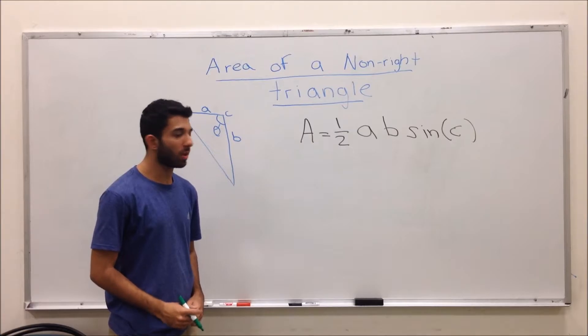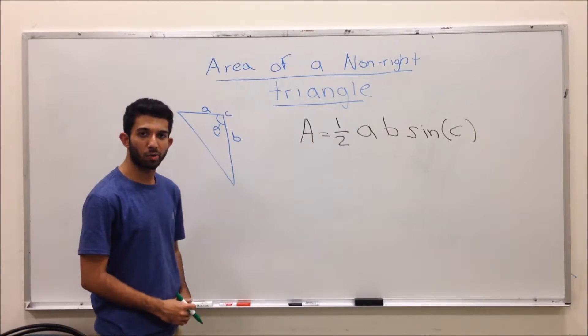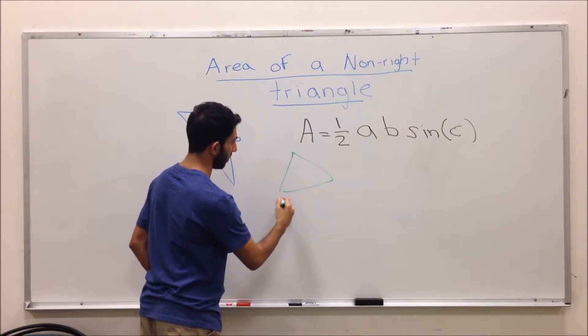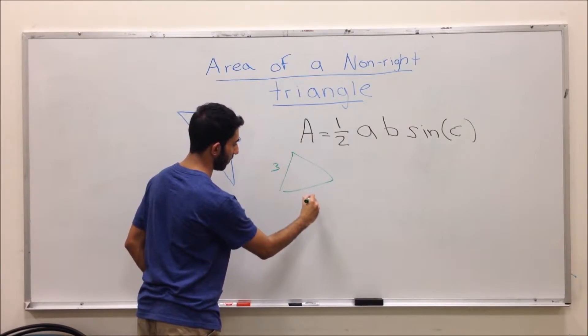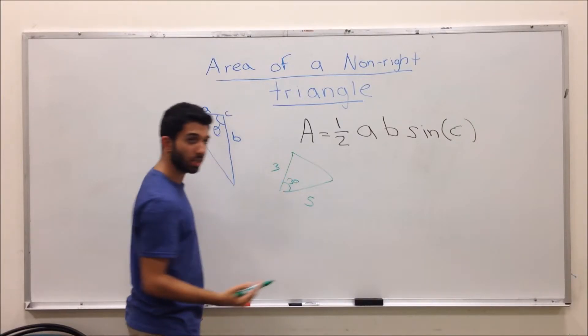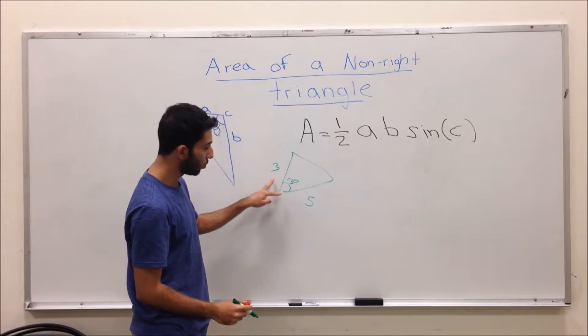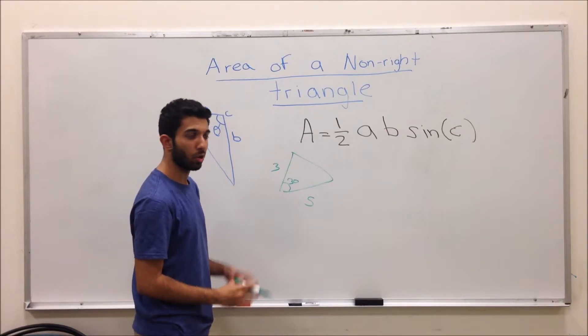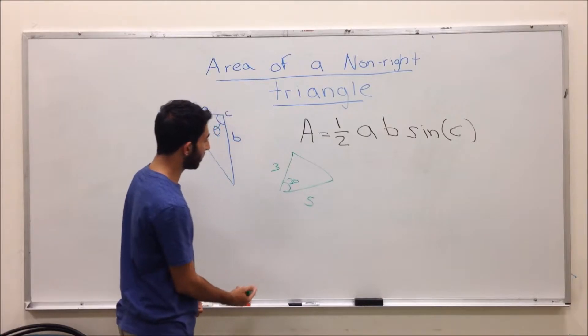Now I will be teaching you an example of how to obtain the area of a non-right triangle. Let's say for instance you have 3, 5, and the angle between them is 30. As I said before, you must have an angle between the two sides, otherwise you will not be able to find the area of that non-right triangle. So here, in this case,